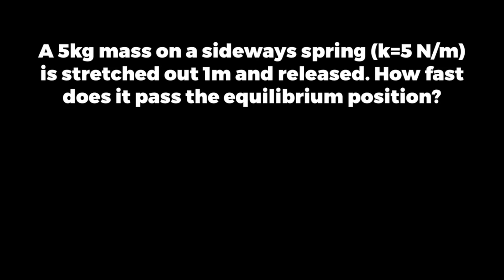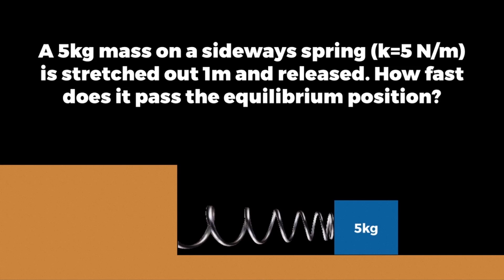We'll use this in an example problem. Suppose we have a five kilogram mass on a sideways spring with a spring stiffness constant of five newtons per meter. We stretch it out one meter and then release the object — how fast will it pass the equilibrium position? We have an object on a table connected to a spring. Any object on a sideways spring uses the same equations as one on a vertical spring, so we can apply the same formulas.